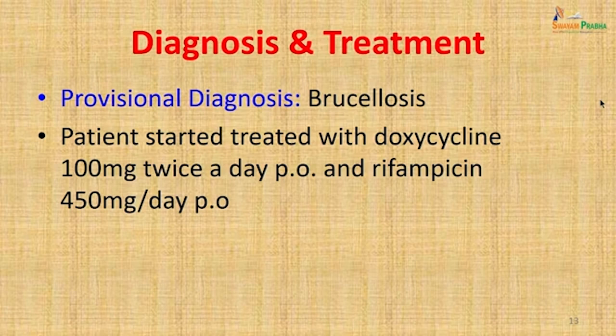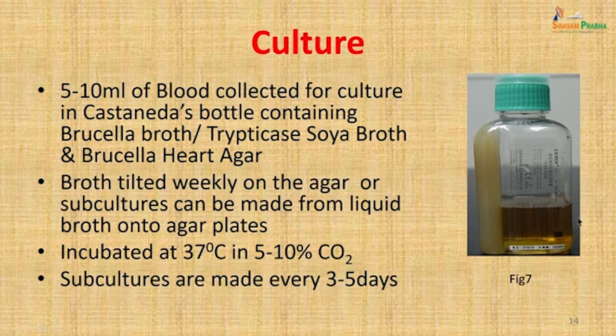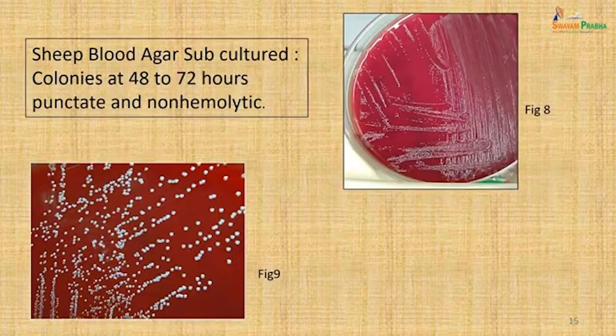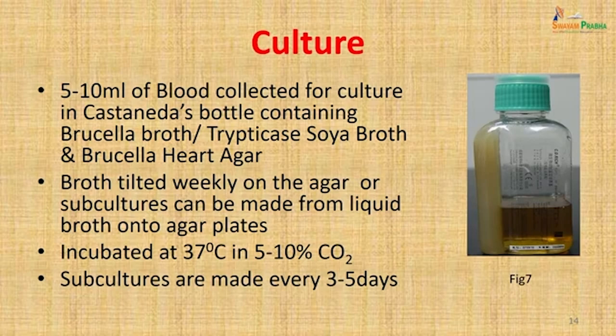The patient was started on doxycycline 100 mg twice daily orally and rifampicin 450 mg per day orally. In the meantime, culture was attempted: 5 to 10 mL of blood was collected into a Castaneda's bottle containing Brucella broth, trypticase soya broth, and Brucella heart agar. The broth was tilted weekly onto the agar, and subcultures were made without causing contamination. It was incubated at 37°C in 5–10% CO₂, with subcultures made every 3 to 5 days on the agar slope.